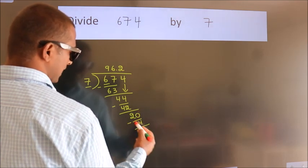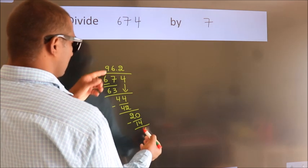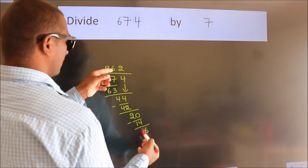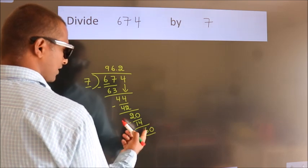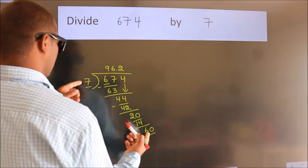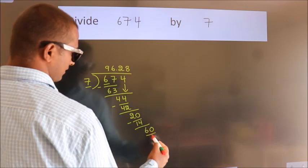Now we subtract. We get 6. After this, we already have the decimal, so directly take 0. So 60. A number close to 60 in the 7 table is 7 eights, 56.